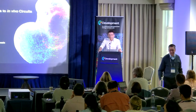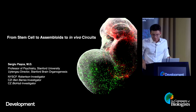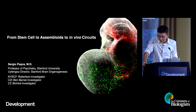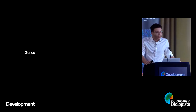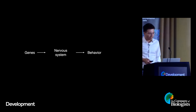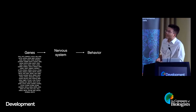Thank you so much. Really delighted to be here and share some of our most recent work. I plan on sharing a couple of stories that are unpublished and would be very grateful — especially for those online — for not screen-sharing some of the data before it actually gets published. One of the big questions in neuroscience is how do genes ultimately build a nervous system and how that yields behavior, which is particularly relevant today as we have a very long list of genes associated with disease.